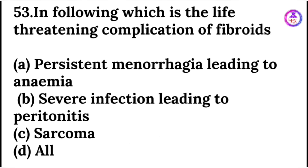Which is the life-threatening complication of fibroid? Life-threatening complications of fibroid can be: persistent menorrhagia leading to anemia, severe infection leading to peritonitis, and sarcoma.